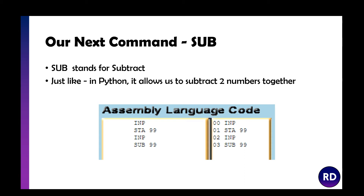SUB, just like ADD, is for subtract — it allows us to subtract two numbers from each other. It takes the number currently in the accumulator and subtracts the value in the specified mailbox. So if you input 10 then 5, and do SUB 99, it does 5 take away 10, giving minus 5. If you want 10 take away 5, you'd need to load 99 first and then subtract 98.